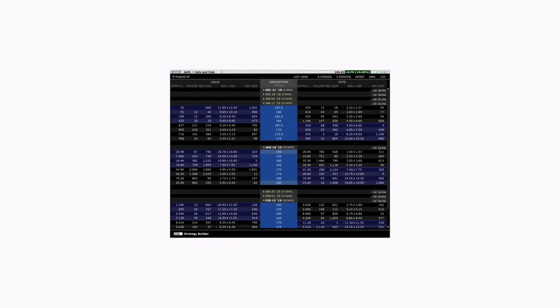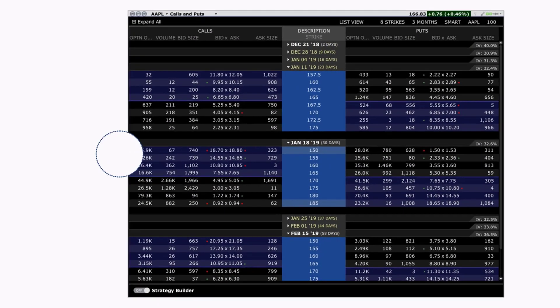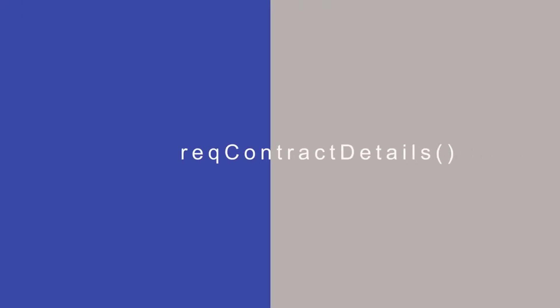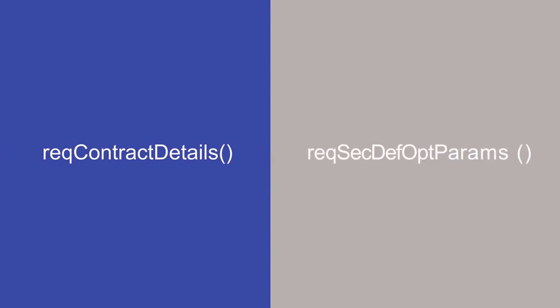Option chains, or more generally lists of derivatives on the underlying index, stock, or future, can be queried from the API. This can be done either with the function REQContractDetails or the function REQSecDefOptParams. Each method has advantages in different situations.